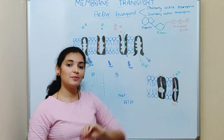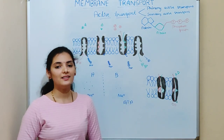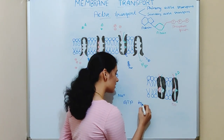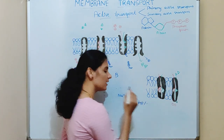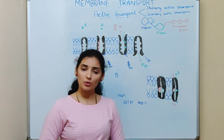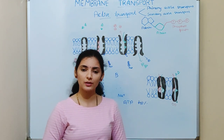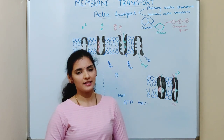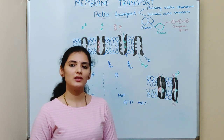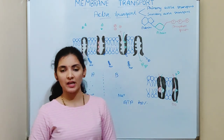This ATP is used for active transport, and the cell will spend about 40% of its cellular energy for active transport. Why should the cell use so much energy? Because most of the molecules are transported via active transport only.